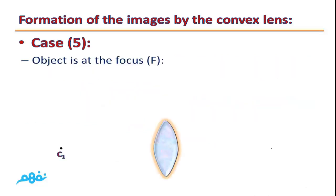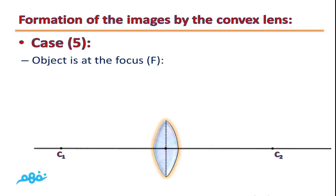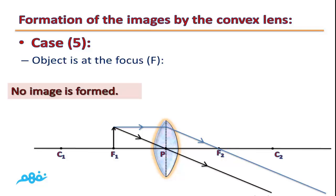Case 5: The object is at the focus. The first light ray is parallel to the principal axis and refracts passing through the focus. The second light ray passes through the optical center. The two refracted light rays are parallel to each other, so there is no intersection. In this case, no image is formed.